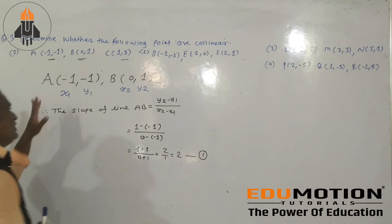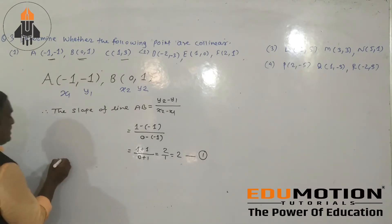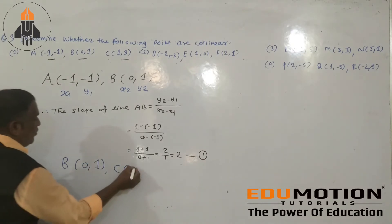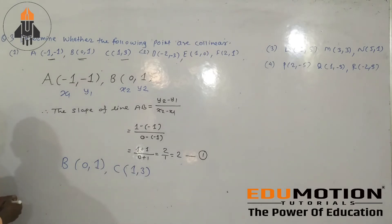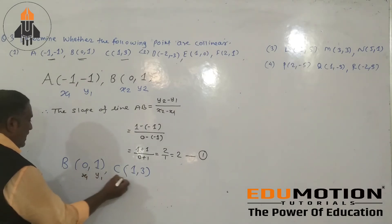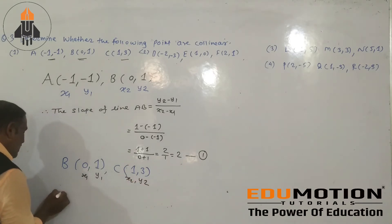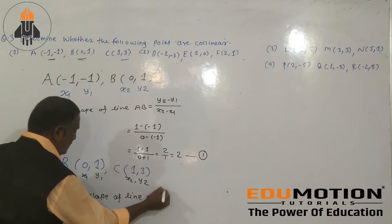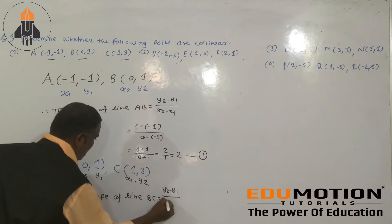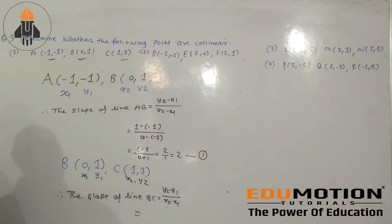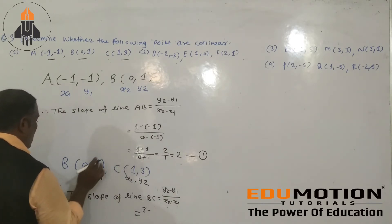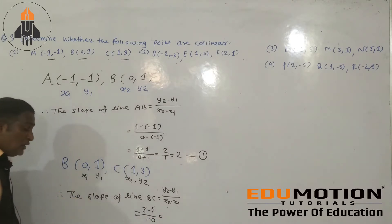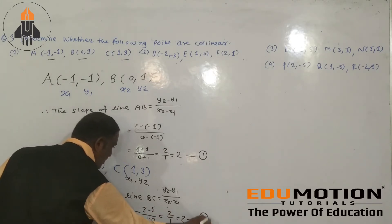Second step: B is 0 comma 1, and C is 1 comma 3. We label these as x1, y1, x2, y2. Therefore the slope of line BC equals y2 minus y1 divided by x2 minus x1. That is: 3 minus 1 divided by 1 minus 0, which gives 2 divided by 1, equal to 2. Since slope of AB equals slope of BC, therefore points A, B, C are collinear.